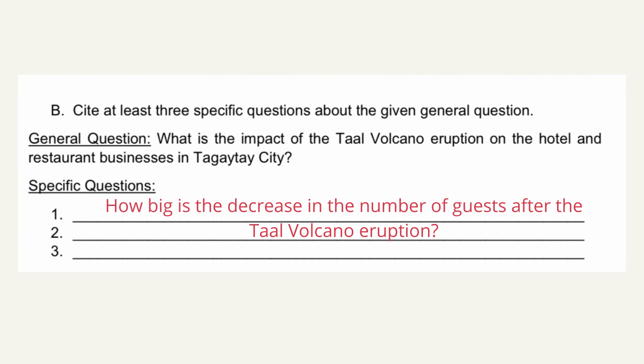In the next activity, you have to cite at least three specific questions about a given general question. The general question is: What is the impact of the Taal volcano eruption on the hotel and restaurant businesses in Tagaytay City? Imagine interviewing the hotel and restaurant business owners in Tagaytay City. What will you ask them? Place them in your specific questions. A sample question is: How big is the decrease in the number of guests after the Taal volcano eruption?